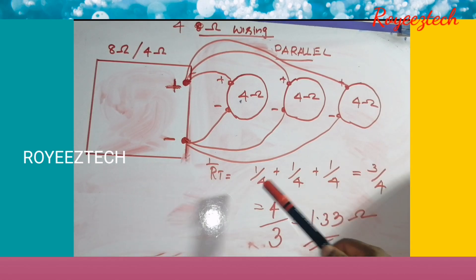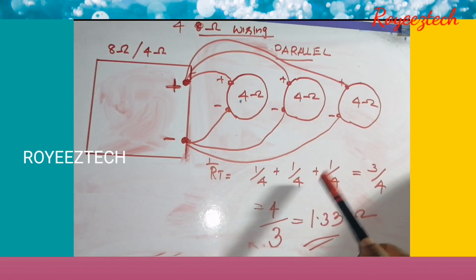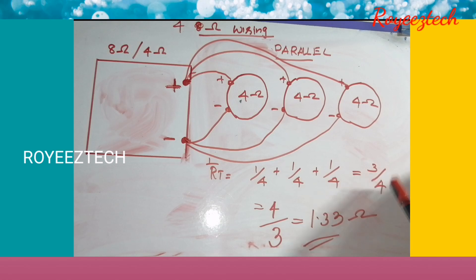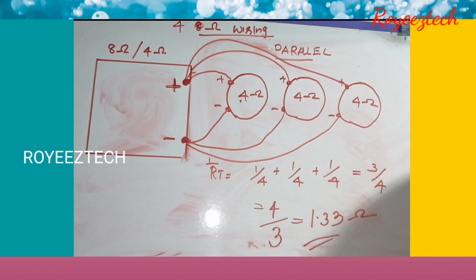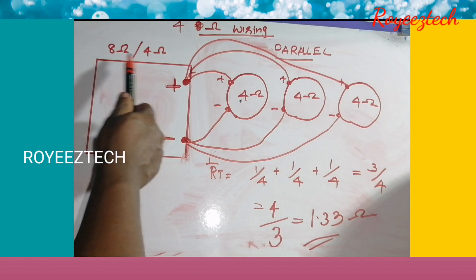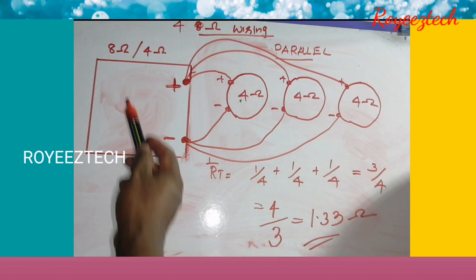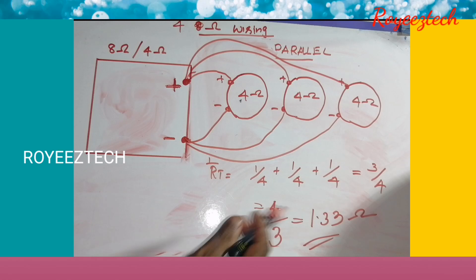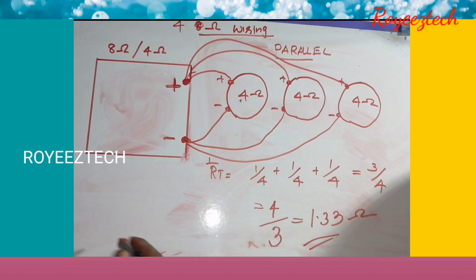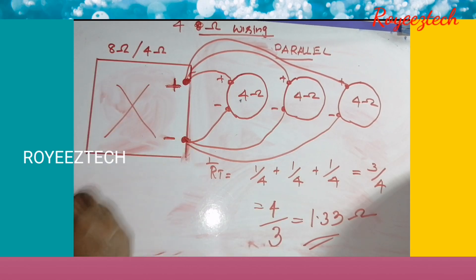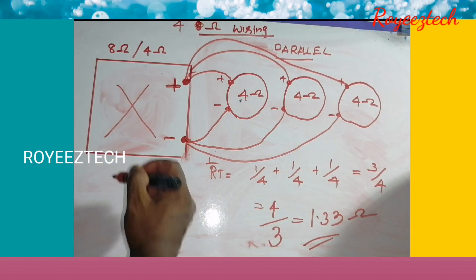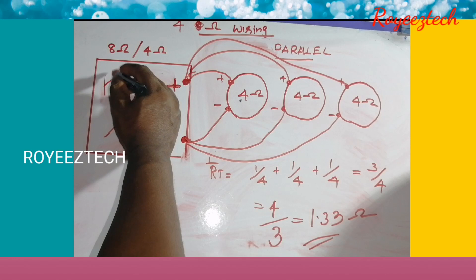We calculate the total resistance: 1 by 4 plus 1 by 4 plus 1 by 4 equals 3 by 4, and 4 divided by 3 equals approximately 1.33 ohms. At 1.33 ohms there is a very high load and the amplifier can be damaged.